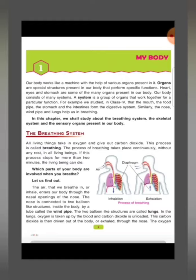For example, we studied in Class 4 that the mouth, the food pipe, the stomach, and the intestines form the digestive system. All these parts together make the digestive system, which you read about in Class 4.